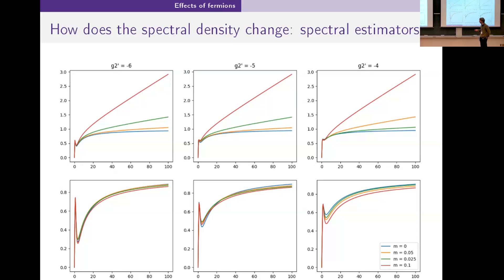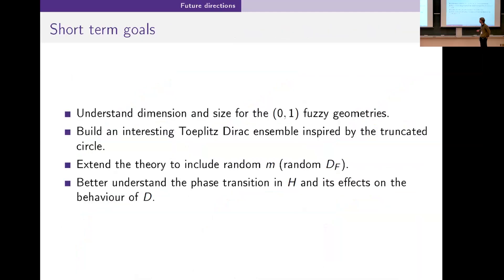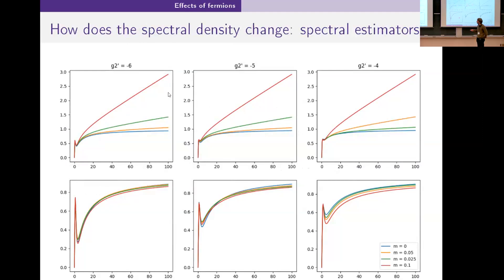I want to understand these better. Some short-term goals for me are to understand better what this dimension is doing and see if we can get a size for these guys. I want to, for now we've considered m a coupling constant, I think we can make m a dynamical variable and get predictions for m as well.